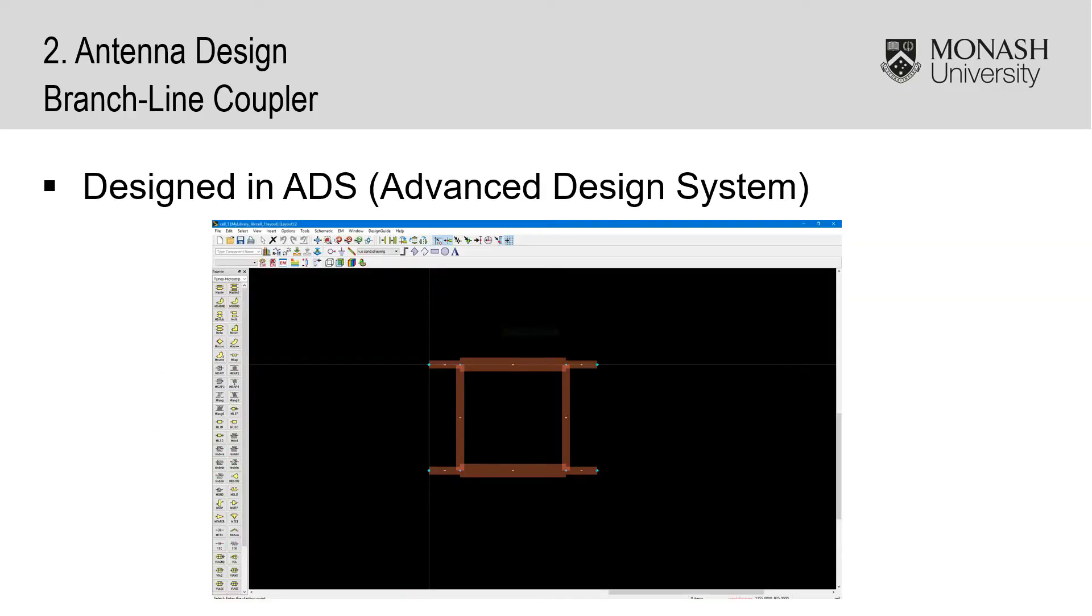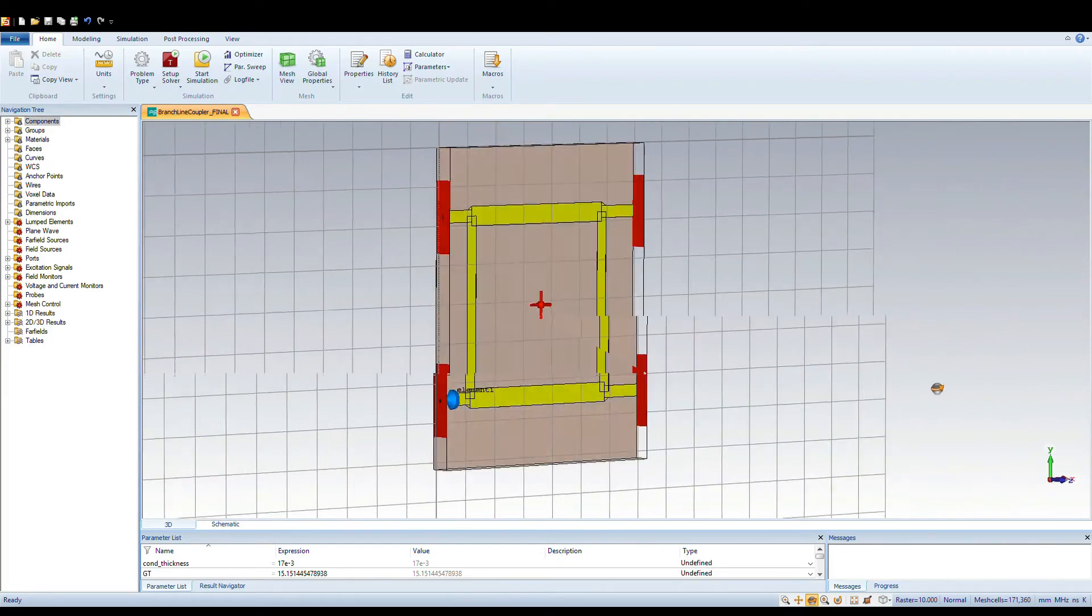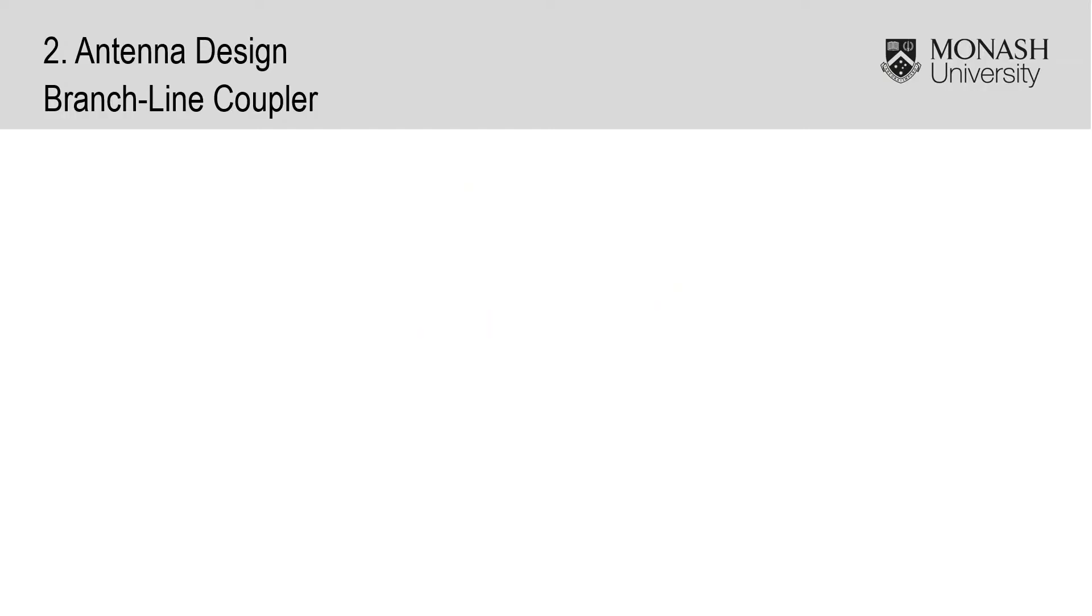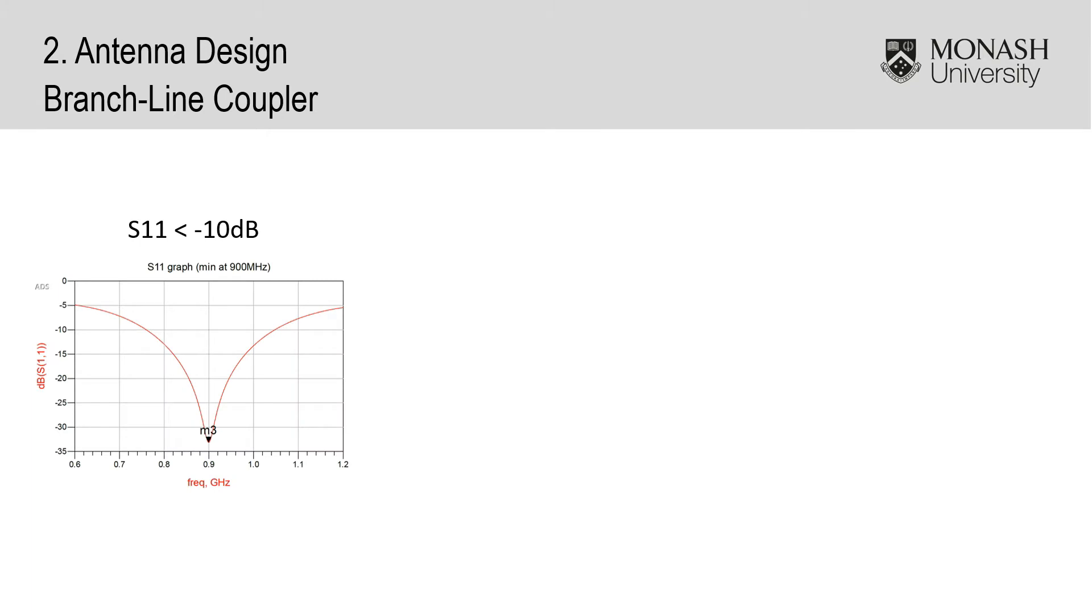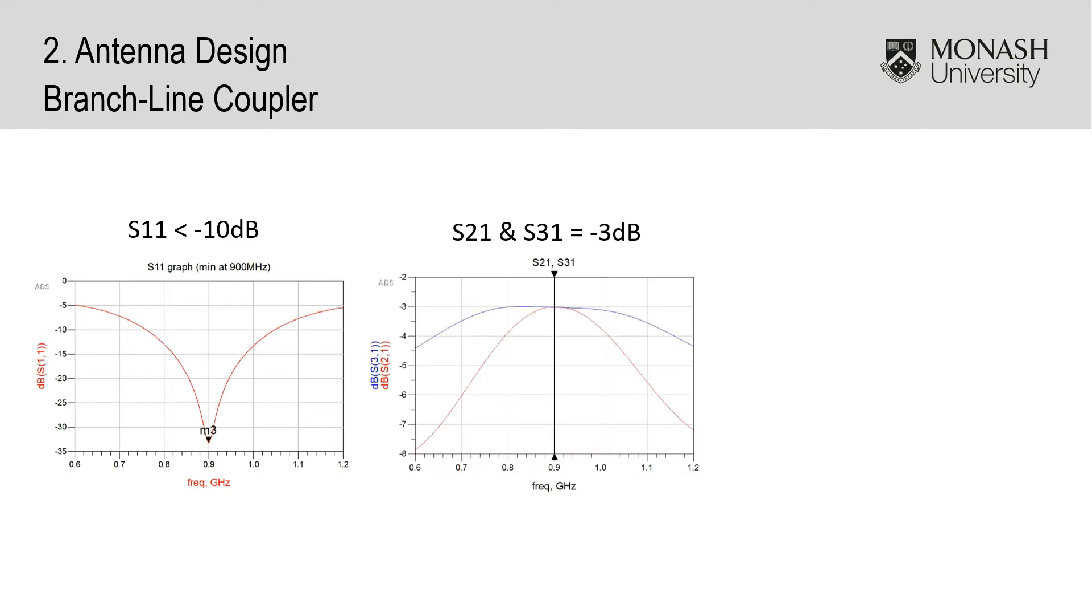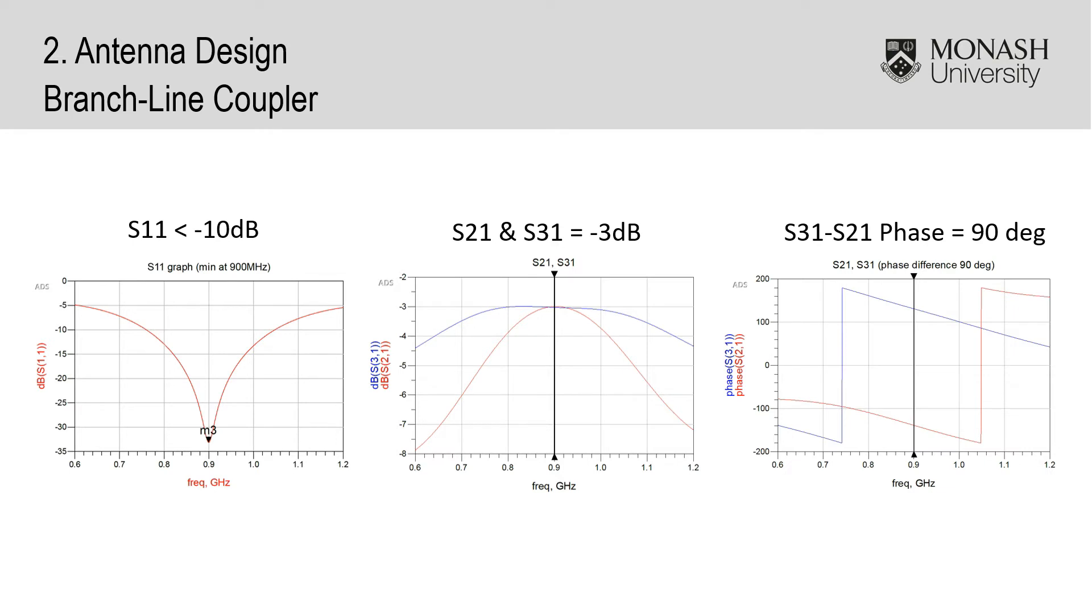The design was first built in ADS and then simulated in CST. The following results were required: S11 had to be less than minus 10 dB at the design frequency, meaning that very low power is reflected back to port 1. S21 and S31 are equal in magnitude at minus 3 dB, showing that the power is divided equally between ports 2 and 3. And finally, ports 2 and 3 should have a phase difference of 90 degrees.